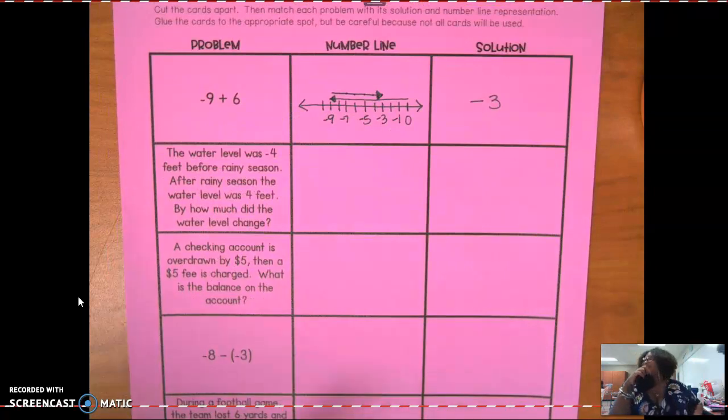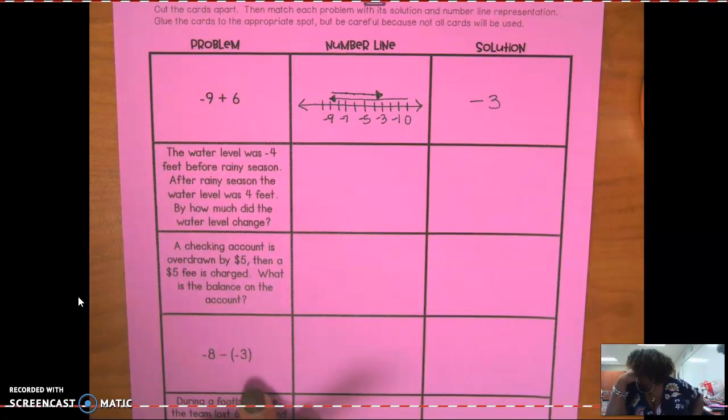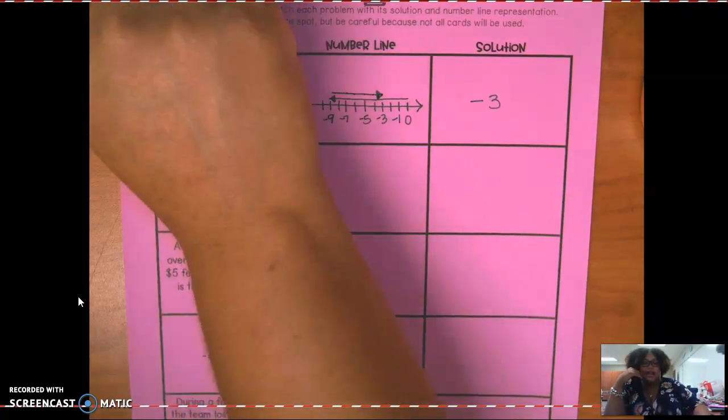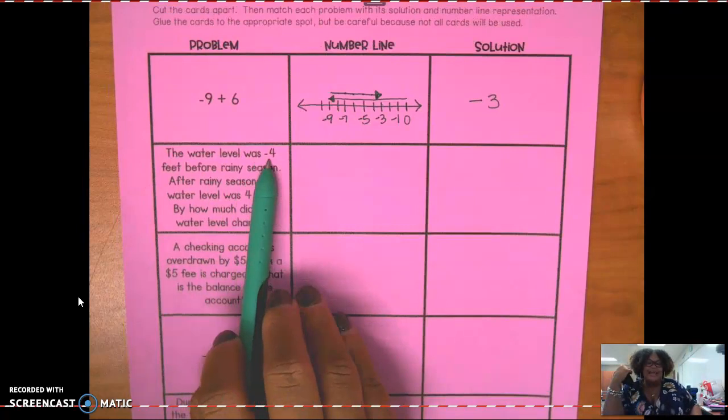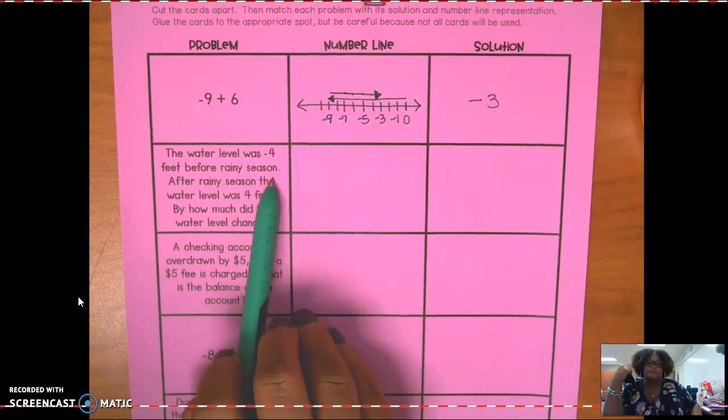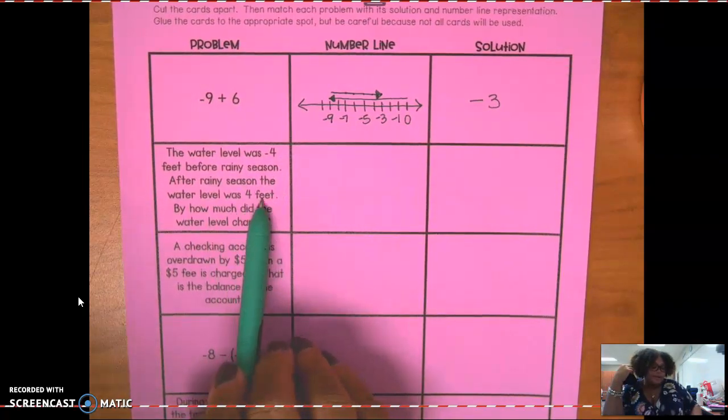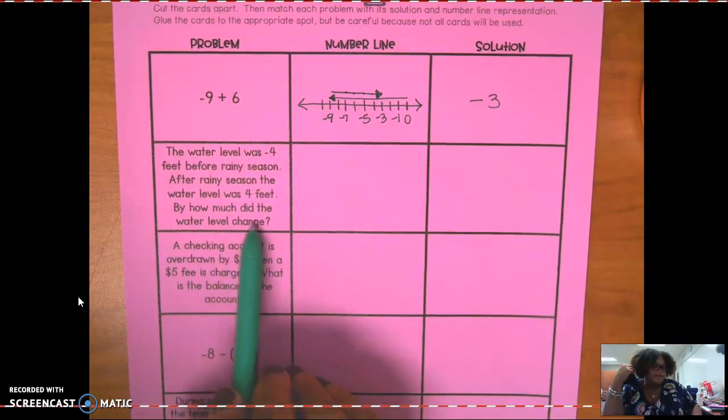Overdrawn means that you've taken too much out of your bank account. And if you have $10 in your bank account and you try and take out 20, are you going to stay in the positive or are you going to go to negative? You're going to go to negative. So the water level was negative four feet before rainy season. Listen, listen. After rainy season, the water level was four feet. By how much did the water level change?